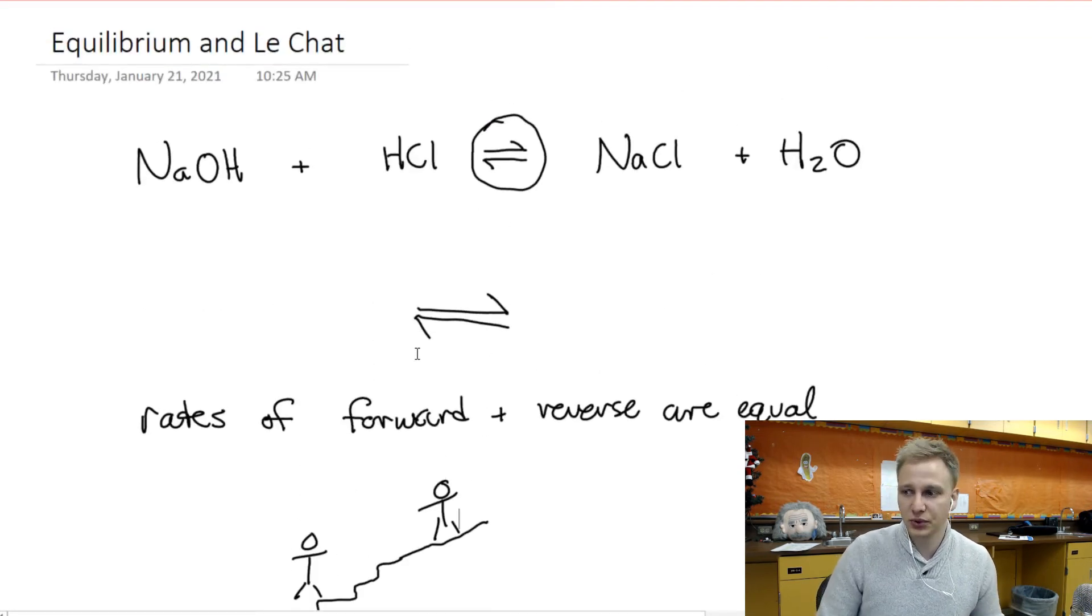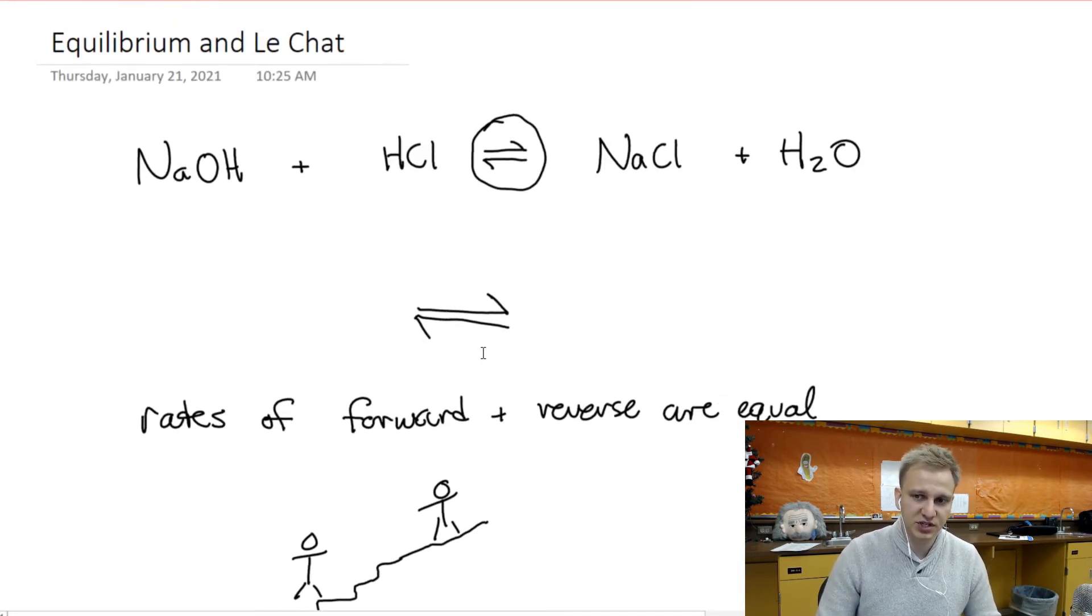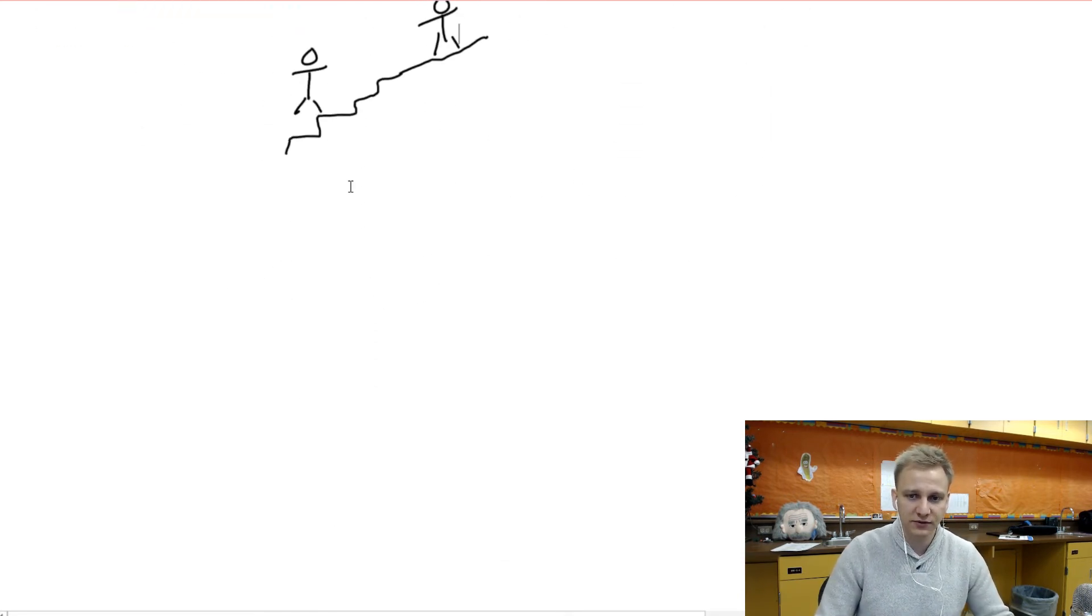And where that comes into play is when we start talking about Le Chatelier's principle. So Le Chatelier's principle says what happens if we change a reaction that has reached equilibrium. So what happens if we have this reaction happening here and I take out part of the product or I add in some of the reactant. What happens? There's four different scenarios where Le Chatelier's principle applies.